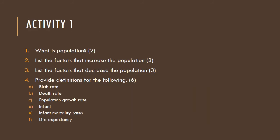Next we have an activity for you to test yourself on what was covered in this video. Question one: What is population? (2 marks.) Question two: List factors that increase the population. (3 marks.) Question four: Provide definitions for the following — a) birth rate, b) death rates, c) population growth rates, d) infant mortality rates, e) life expectancy. (6 marks — one for each definition.)